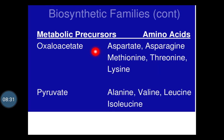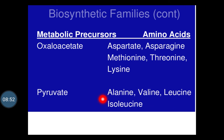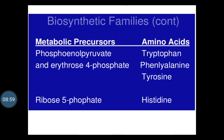From the oxaloacetate, the biosynthesis of aspartate, asparagine, methionine, threonine and lysine get biosynthesized. From the pyruvate, which acts as a precursor for the biosynthesis of alanine, valine, leucine and isoleucine. Then the phosphoenol pyruvate and erythrose-4-phosphate, that is from the shikimic acid pathway, the biosynthesis of amino acids such as tryptophan, phenylalanine and tyrosine will get biosynthesized. From ribose-5-phosphate, the formation of histidine will take place.